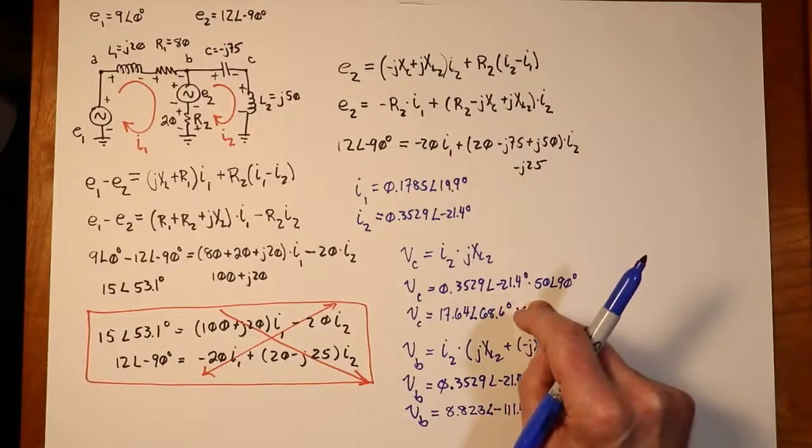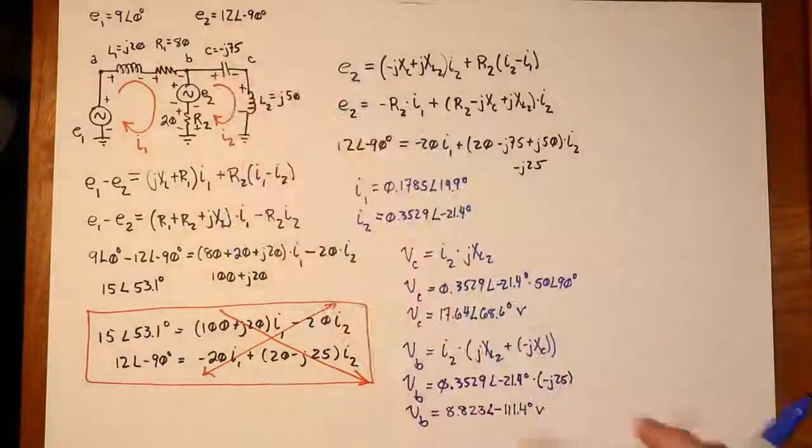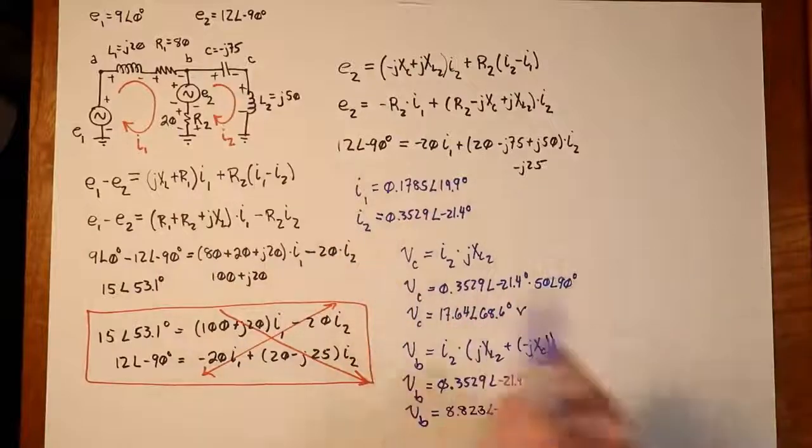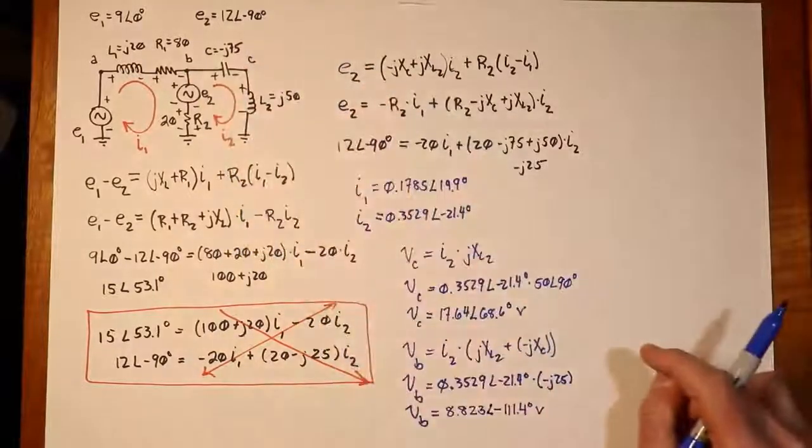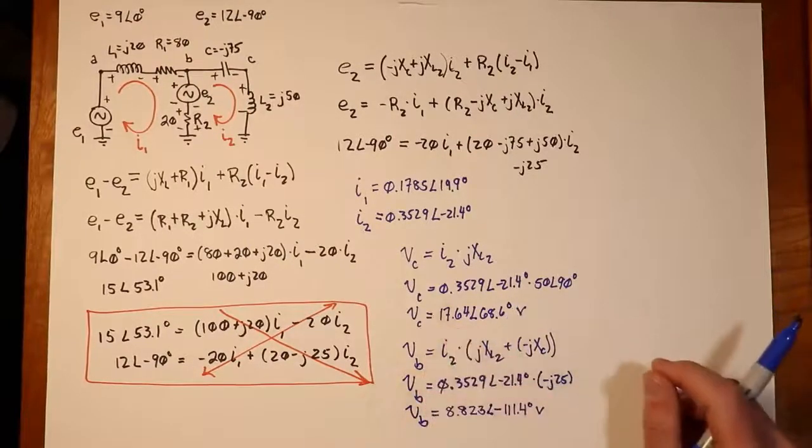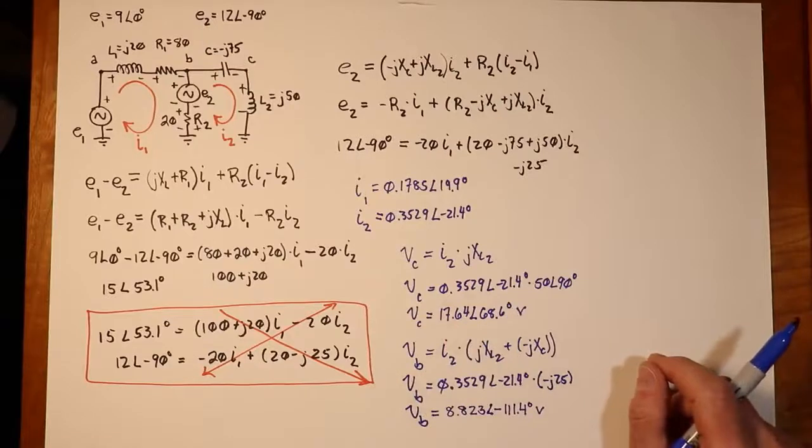They're each 90 degrees out of phase with a resistor, one positive, one negative. So, those two elements are going to be 180 degrees out of phase with each other. So, yeah, it makes perfect sense that Vb is a smaller magnitude than the Vc is. Your other option, your other way of finding Vb, is to kind of come down this way.